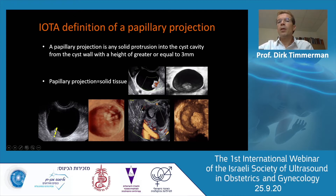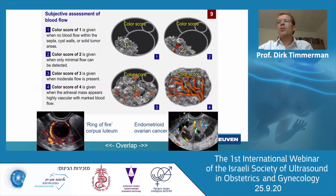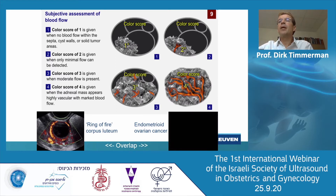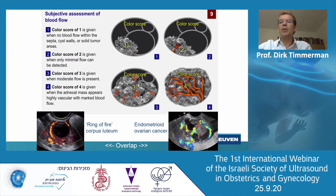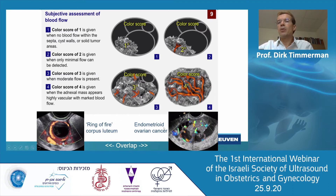You don't measure the wall thickness together with a papillation. A protrusion that's less than three millimeters in height is not a papillation, but a cyst wall irregularity. There is a color score: color score one means no flow — color score zero doesn't exist. Color score two is minimal flow, color score three is moderate flow, and color score four is very strong flow, which you can see also in benign cases like corpus luteum or in an abscess, but most of the time in cancer.